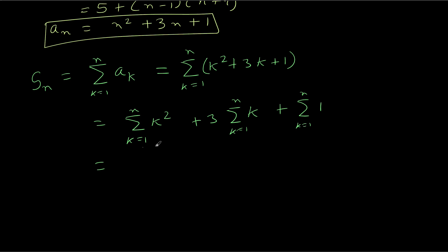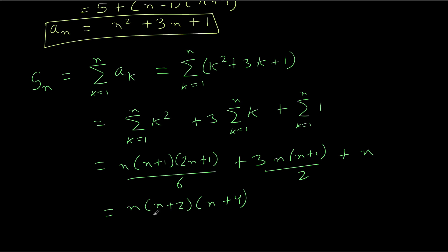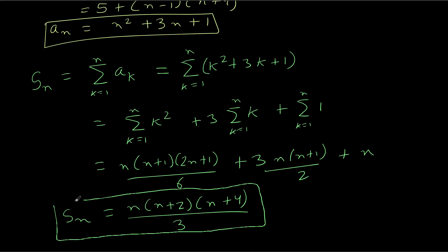We know these standard formulas: summation of K squared equals N(N+1)(2N+1)/6, summation of K equals N(N+1)/2, and the sum of 1 added N times is simply N. Simplifying the full expression gives the final answer, which is the sum of the series given above.